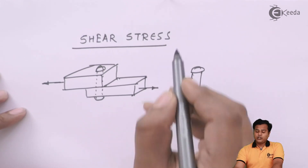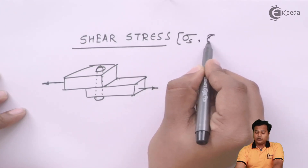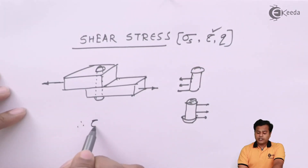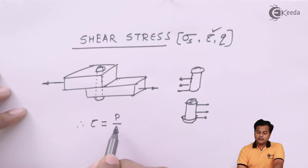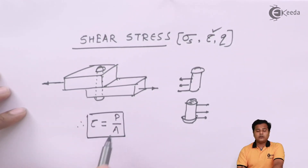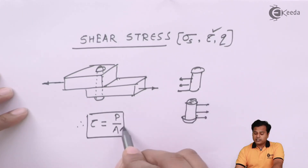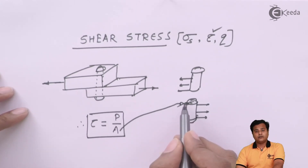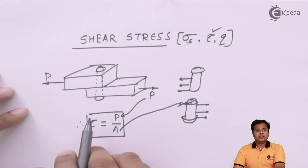For shear stress we prefer the letter tau. The formula has the same form as normal stress, but the key difference is the area considered: we use the area that is being sheared off. The value of force is the same as before, applied to this sheared area. That is the essence of shear stress.